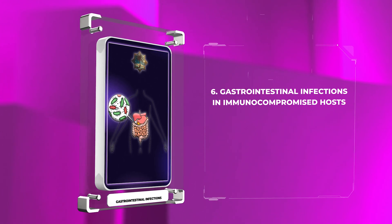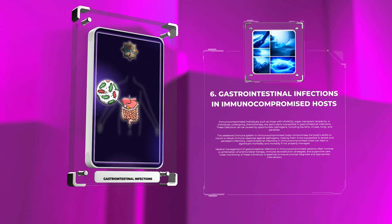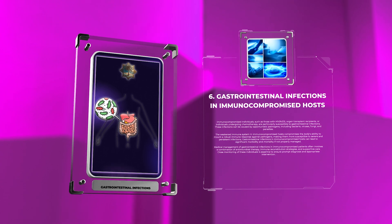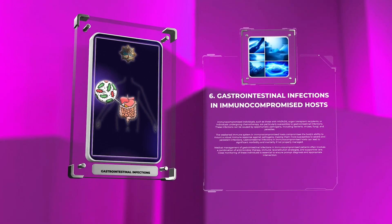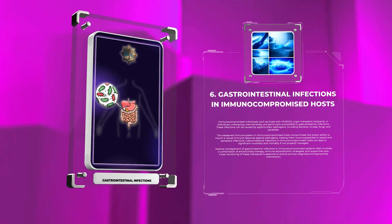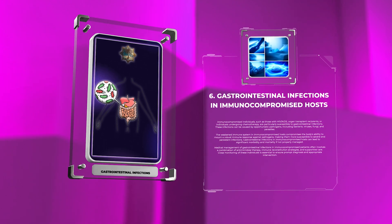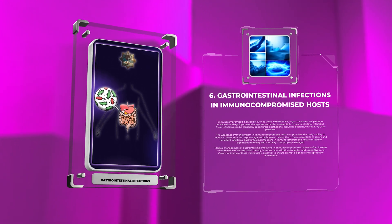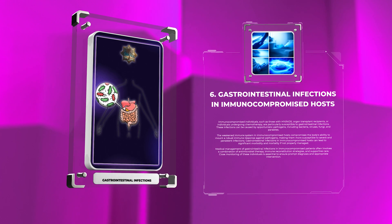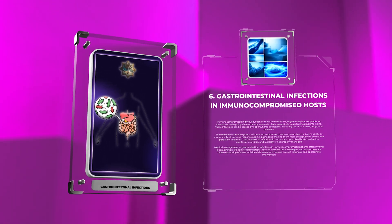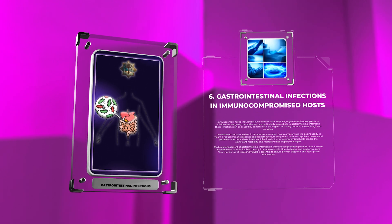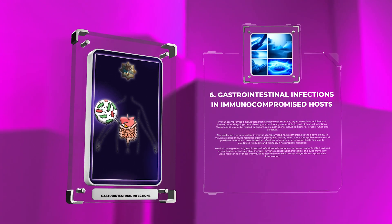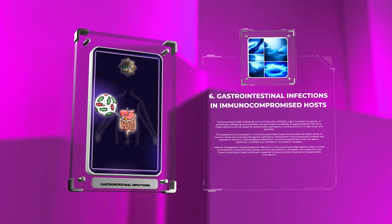Immunocompromised individuals, such as those with HIV/AIDS, organ transplant recipients, or individuals undergoing chemotherapy, are particularly susceptible to gastrointestinal infections. These infections can be caused by opportunistic pathogens including bacteria, viruses, fungi, and parasites. The weakened immune system compromises the body's ability to mount a robust immune response, making them more susceptible to severe and persistent infections. Medical management often involves a combination of antimicrobial therapy, immune reconstitution strategies, and supportive care, with close monitoring essential for prompt diagnosis and appropriate intervention.